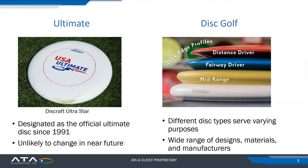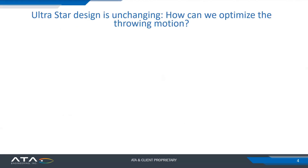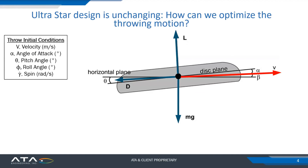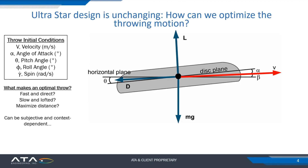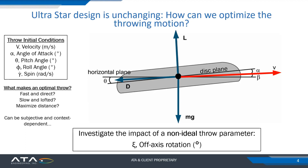Ultimate generally relies on a single disc — the Disc Craft Ultra Star, which has been the standard since 1991 and is unlikely to change. In disc golf, a wide variety of discs are used for different purposes, whether maximizing distance or control, with a wide range of designs and manufacturers. For ultimate, the question becomes: how can we optimize the throwing motion? We have initial throw conditions including velocity, angle of attack, pitch angle, roll angle, and spin velocity that describe the vast majority of throw types.